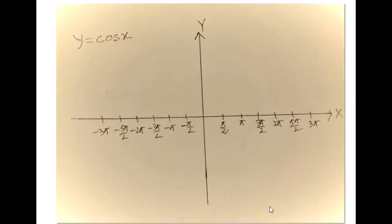Now for the graph of y equals cos x. Similarly as before, I will indicate on the x axis the points pi over 2, pi, negative pi over 2, negative pi, and so on.